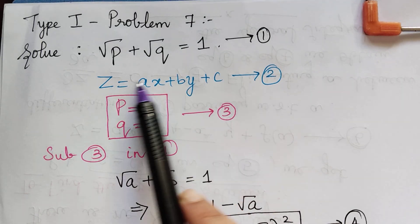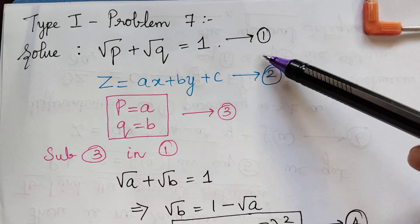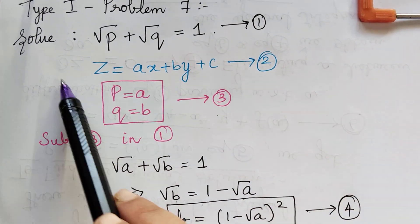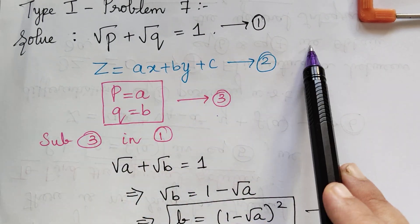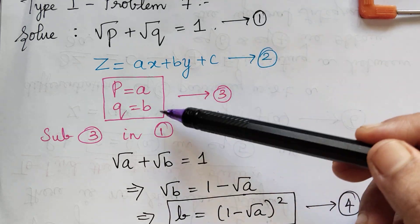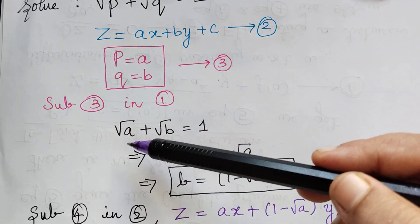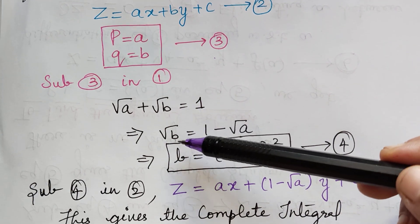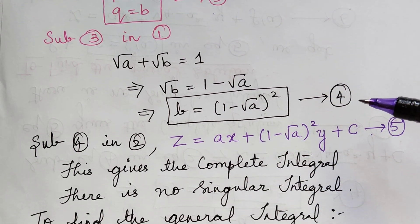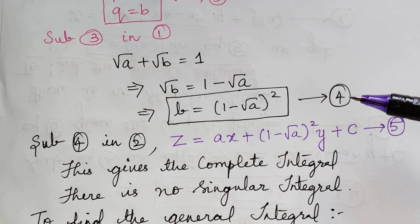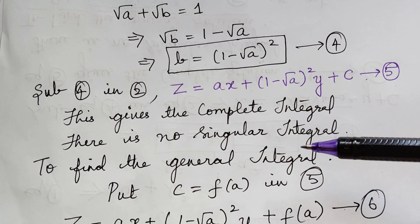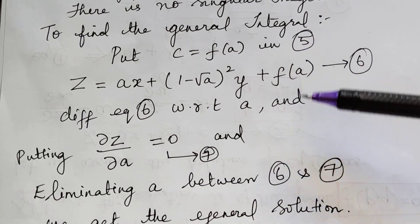Problem 7 is presented with just the key steps noted — please include the usual method in full. After obtaining p = a and q = b, substituting gives √a + √b = 1, so √b = 1 minus √a. Squaring both sides gives b = (1 minus √a)², marked as equation 4. Substituting in equation 2 gives the complete integral. There is no singular integral, and the general integral is obtained as usual.